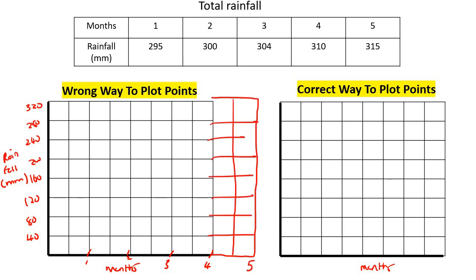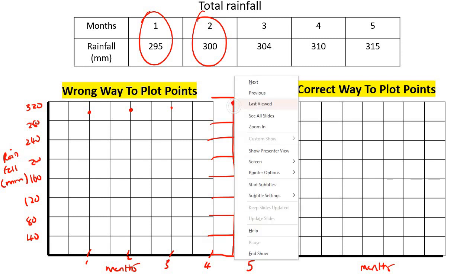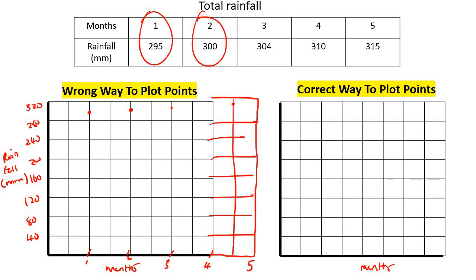So we could say 1 and 295, which would be somewhere over there. 2 and 300, which would be over there. 3 and 304, which would be there. And then 4 and 310, that would be more like there, so 4 would be a bit higher, like there. And then 5 and 315, which would be like there.